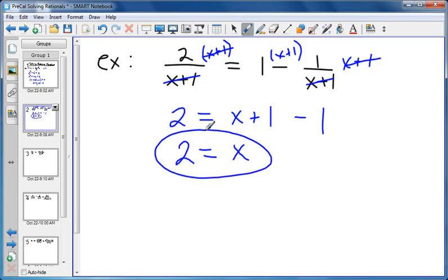Again double check, go back and put it in the original. Make sure it doesn't create any problems with zero going into the denominator, which this does not, so it's good.